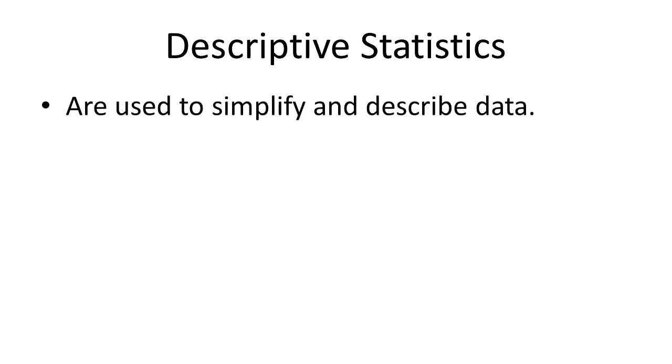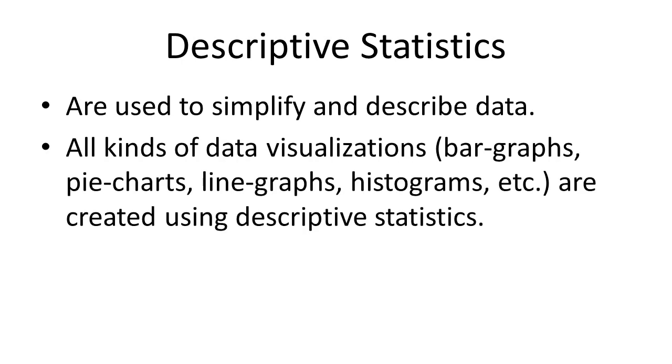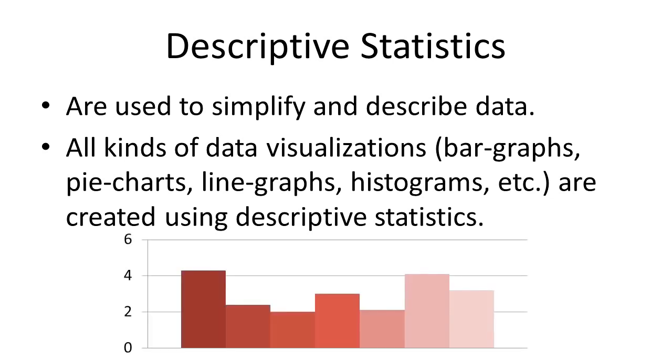These procedures come in two broad categories: descriptive statistics and inferential statistics. Descriptive statistics are numbers, or sometimes charts, that are used to simplify and describe data. All kinds of data visualizations — every bar graph, pie graph, line chart — all that stuff that simplifies and describes the data so you can more easily understand it, that's called descriptive statistics.